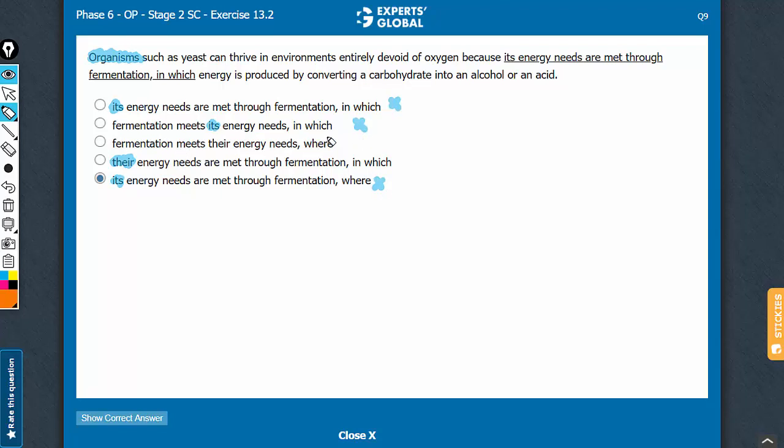Let's compare C and D now. Where is used only for a place. Energy needs, where. Where refers to the noun before the comma. Energy needs where. Energy needs is not a place. So answer choice C doesn't make sense.